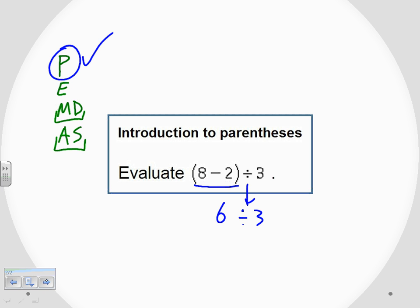6 divided by 3. That's all I've got left to do. That gives us 2. So I have evaluated this problem; I've simplified it all the way down to just one number, making sure that I did the parentheses as the very first order of operation.